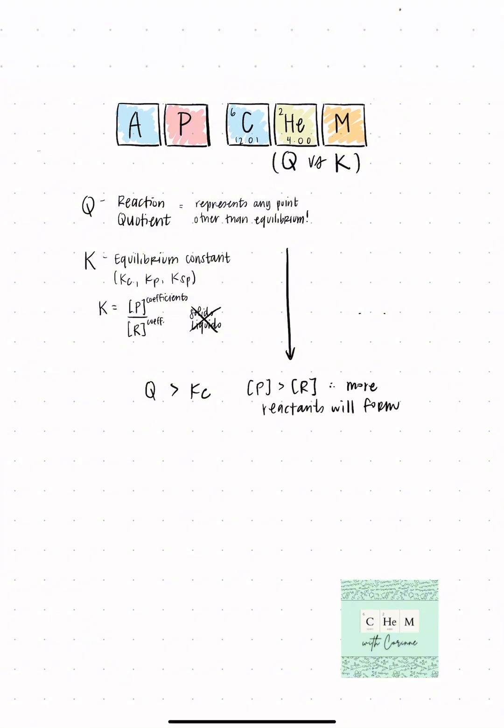So if Q is greater than K, that means the concentration of the products is greater than that of those reactants. So think about Le Chatelier's principle. When the concentration of the products is greater than the reactants, the reverse reaction is going to be favored as we're forming more products.